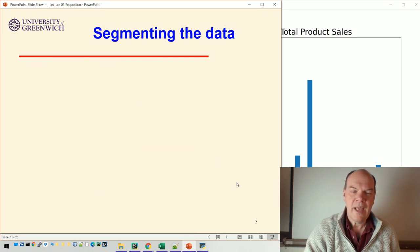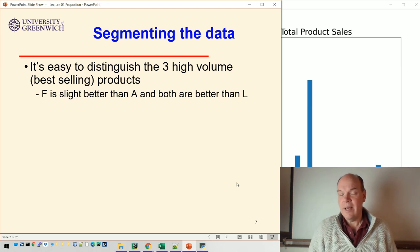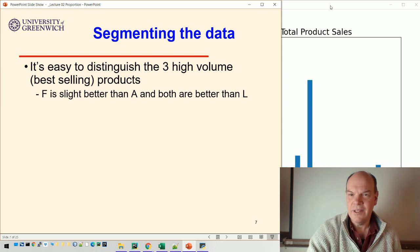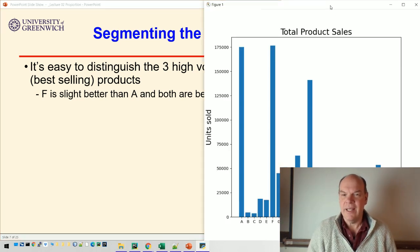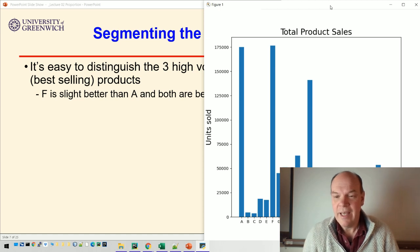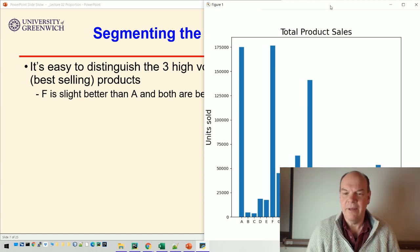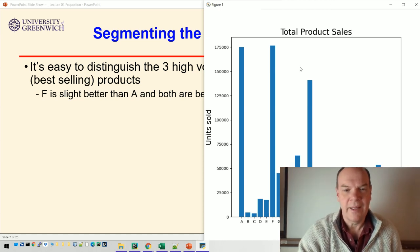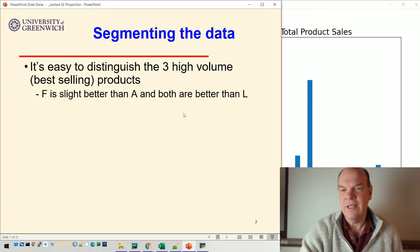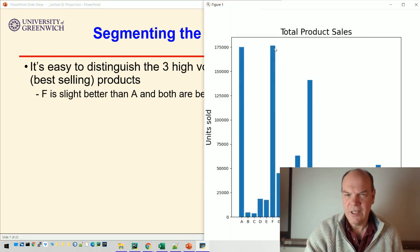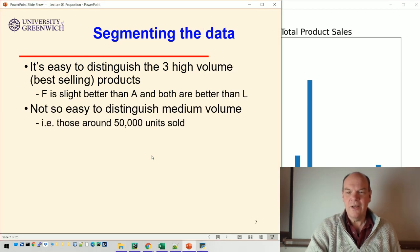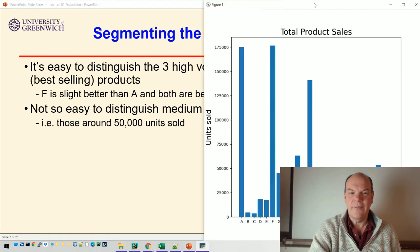And we can easily look at that bar chart and see which are the three highest high volume, best selling products. And let's just do that. There it is. You can easily see that A, F and L are the highest selling, and A and F are the two top selling. And then there's a big gap between those and anything else. So F is slightly better than A. You can see just about that F is slightly higher than A, and they're both quite a bit better than L.